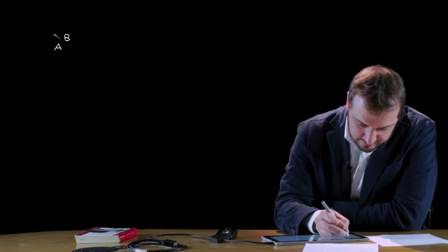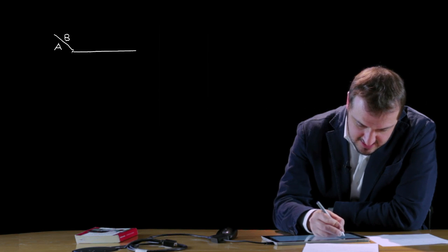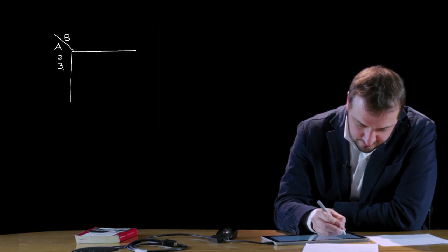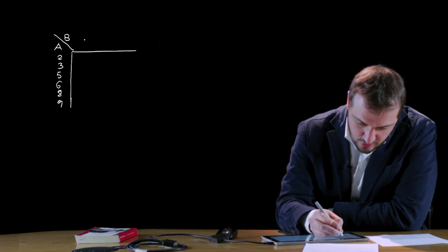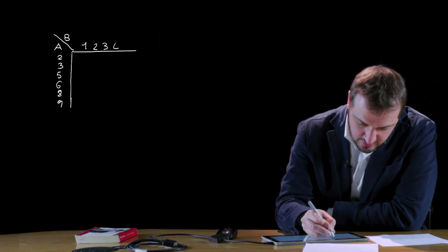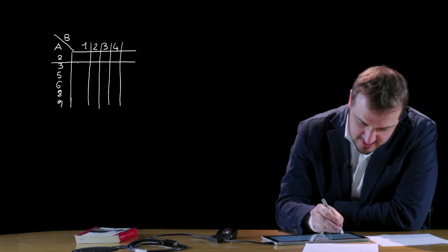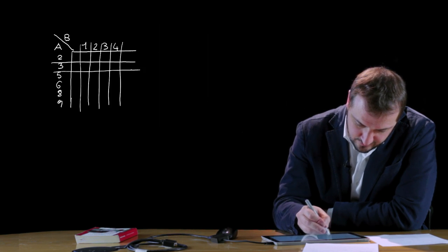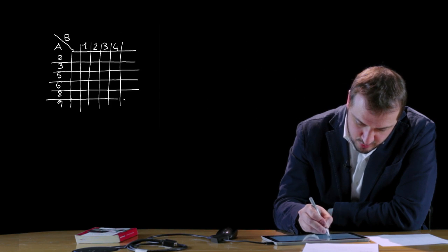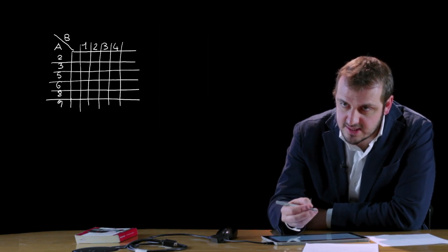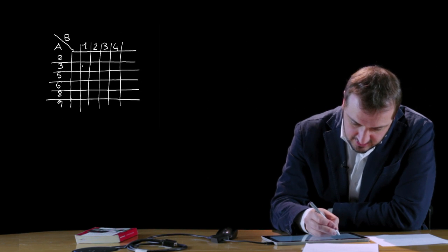Un altro tipo di rappresentazione è quella relativa alla tabella a doppia entrata, dove si identificano l'insieme A e l'insieme B. Si mettono gli elementi dell'insieme A — 2, 3, 5, 6, 8 e 9 — e gli elementi dell'insieme B: 1, 2, 3 e 4. Si compone la tabella facendo una griglia e si vanno a inserire con delle x i valori corrispondenti che rispettano la legge: x appartenente ad A è triplo di y appartenente a B, quindi (3,1), (6,2) e (9,3).